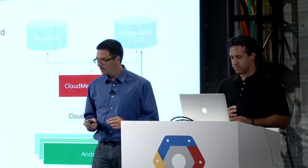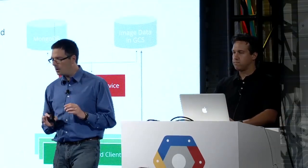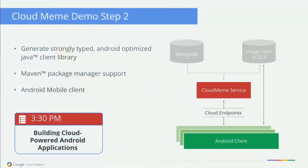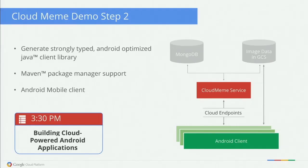Can we switch back to slides? What we just showed you was creating this strongly typed Java client library using the endpoints command. We talked about Maven package management support and how to build the Android app. At 3:30 today there'll be a whole talk just on building cloud backends for Android apps right in here — I encourage you to go to that if you want more info.